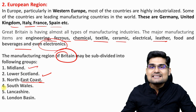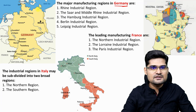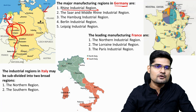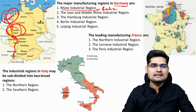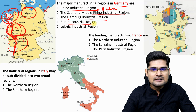In Germany, the Rhine industrial region alongside the Ruhr — famous for coal — is very prominent. Other regions include Saar and Middle Rhine, Hamburg, Berlin, and Leipzig industrial regions. You should practice marking all these areas on the map of Germany.